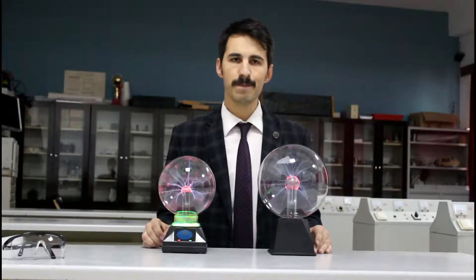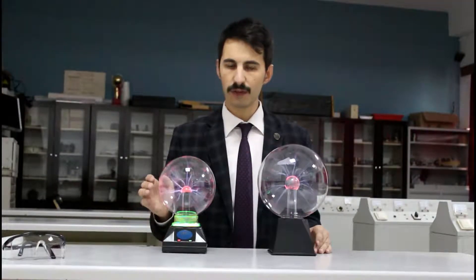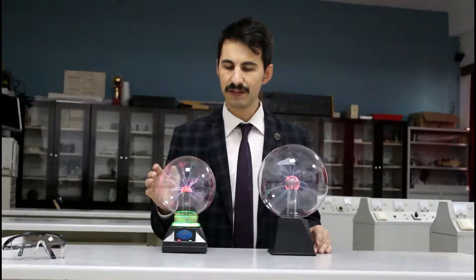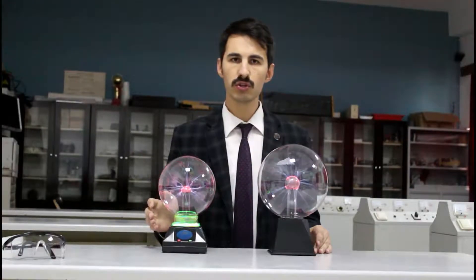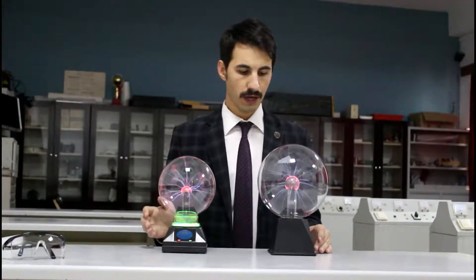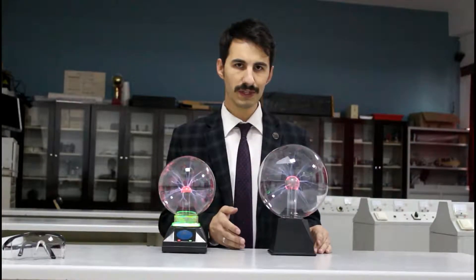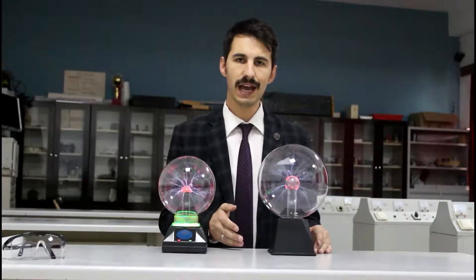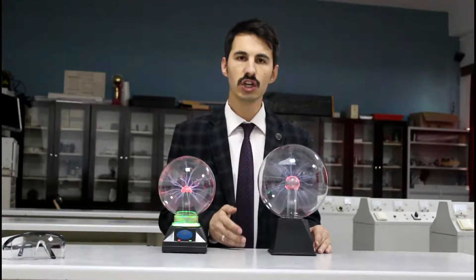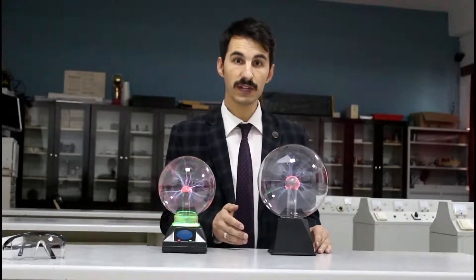Plasma Globe is a thin spherical glass shell filled with normal gases and at the center it has a high voltage electrode. The machine has a stepped up transformer that takes 12V DC and 1A to generate 20,000 Hz and 5,000 volts.